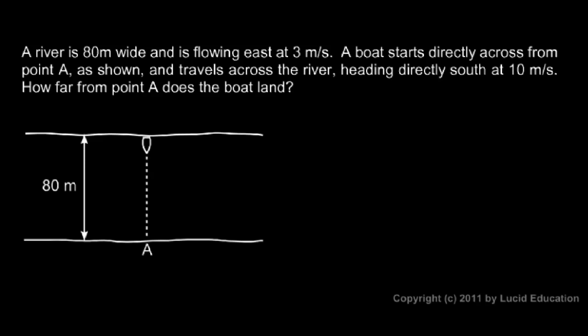Now we'll do an example with a specific number for the speed of the river. Let's read the problem. A river is 80 meters wide and is flowing east at 3 meters per second. So that's the velocity of the river — 3 meters per second to the east.